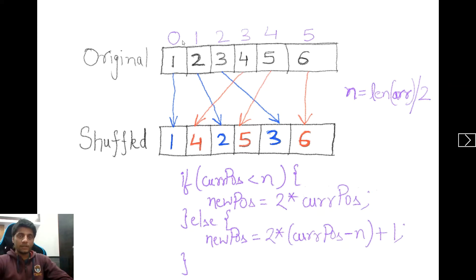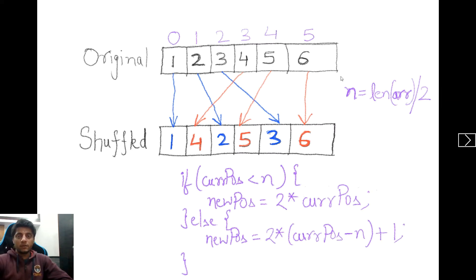Let's see what that formula is. In violet color I have written the current indices of the elements in the original array, and n is half the size of the array. The new positions in the shuffled array are: if the current position is less than n, new position equals 2 times current position; else, new position equals 2 times (current position minus n) plus 1. You can verify this: for element 2 at index 1, new position is 2×1=2, and you can see 2 is at index 2 in the shuffled array. For element 5 at index 4, which is greater than n=3, new position is 2×(4-3)+1=3, and 5 is indeed at index 3. The first and last elements remain in place: for 1 at index 0, 2×0=0; for 6 at index 5, 2×(5-3)+1=5.